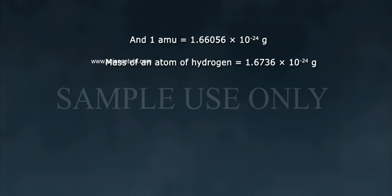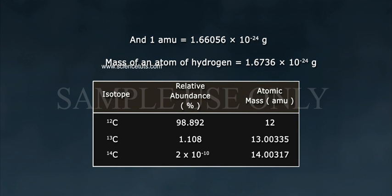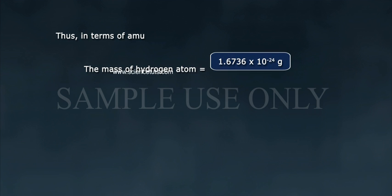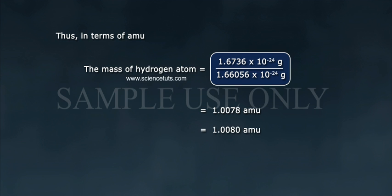The mass of an atom of hydrogen equals 1.6736 × 10⁻²⁴ grams. Thus, in terms of atomic mass unit, the mass of hydrogen atom equals 1.6736 × 10⁻²⁴ grams divided by 1.66056 × 10⁻²⁴ grams, which equals 1.0080 atomic mass units.